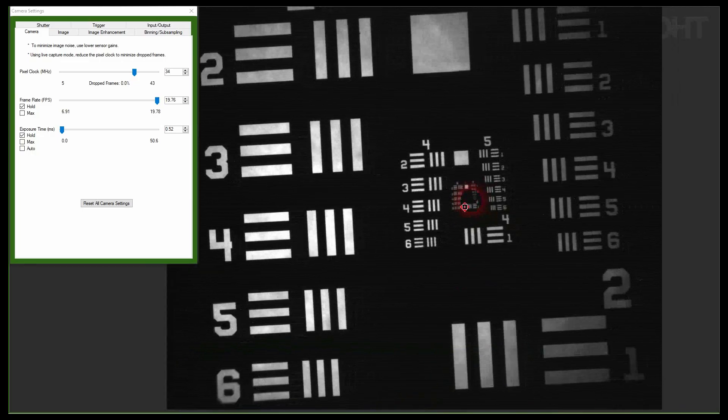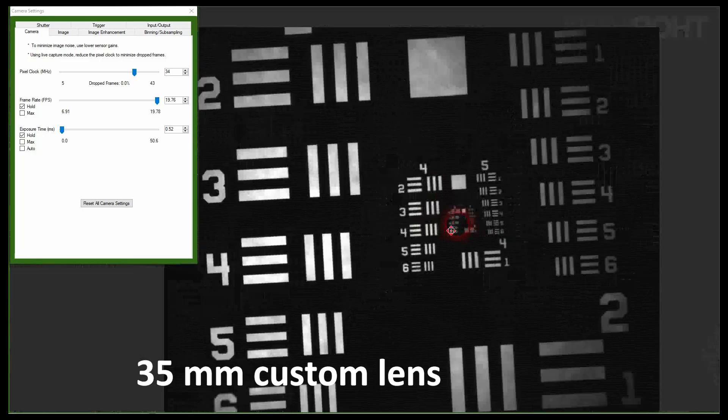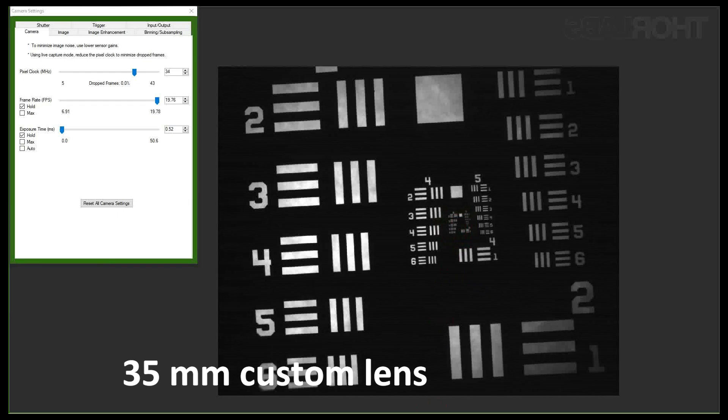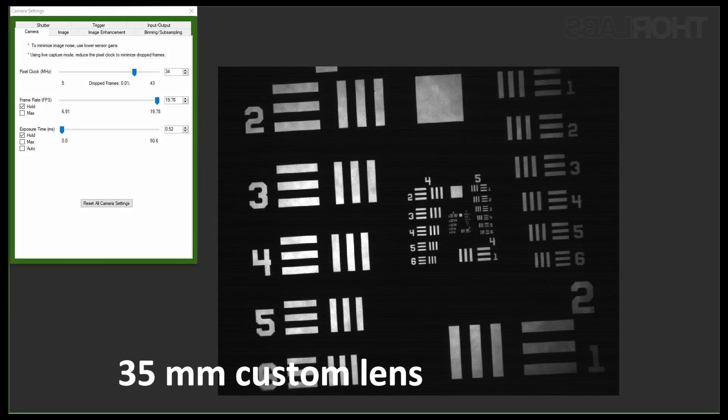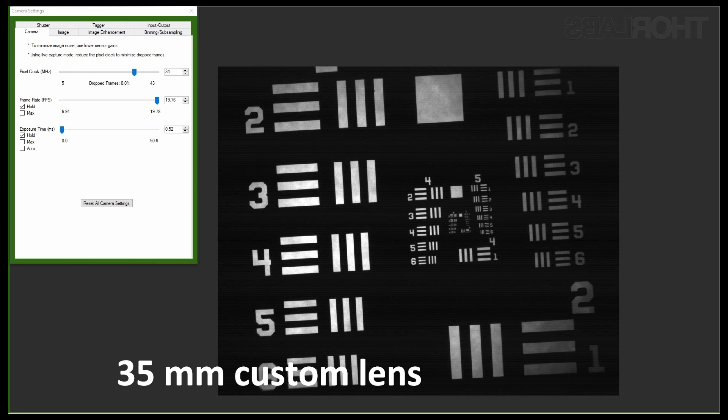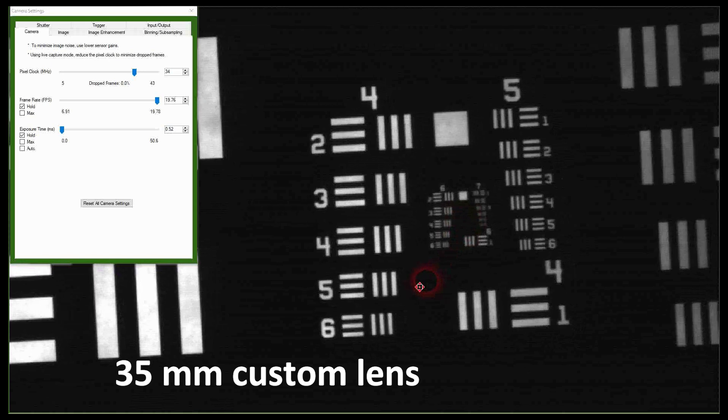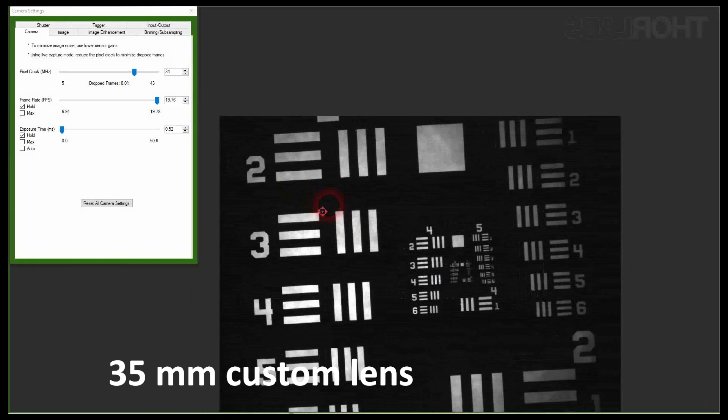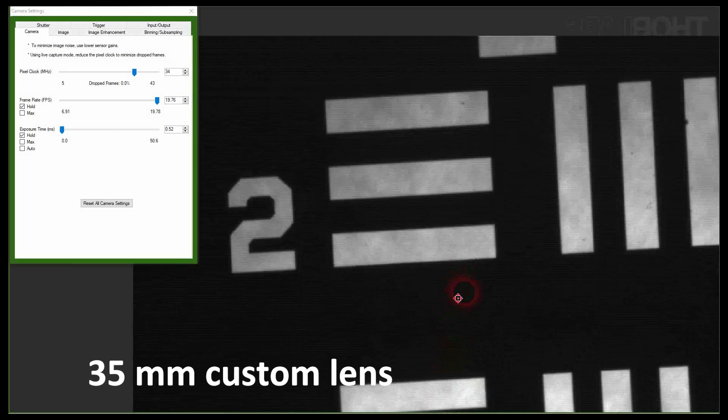And finally this is what we get with our custom objective. The image is of extremely good quality at the center but also on the edge of the image and details down to 3 micrometers can still be recognized easily at up to 2.5 mm off center. This is really good performance considering that we built this objective from stock elements.